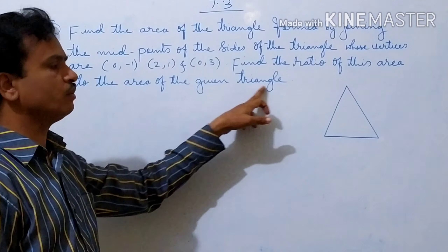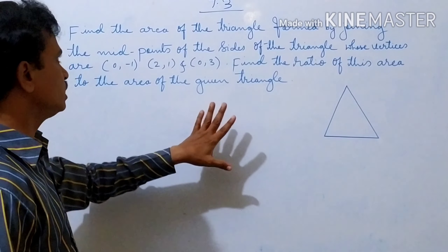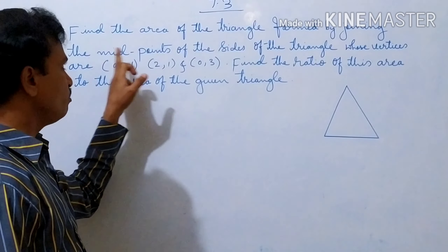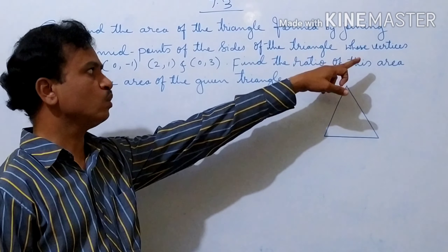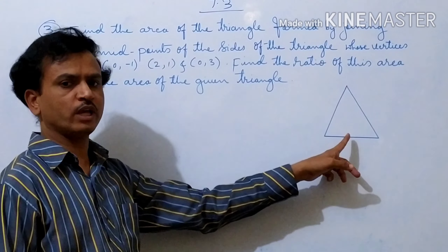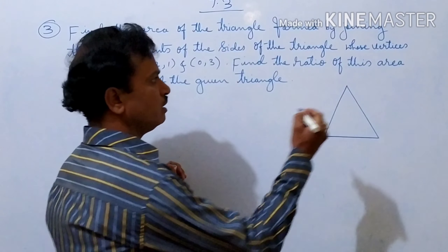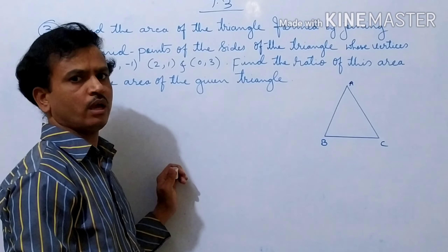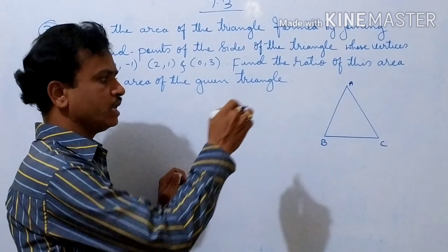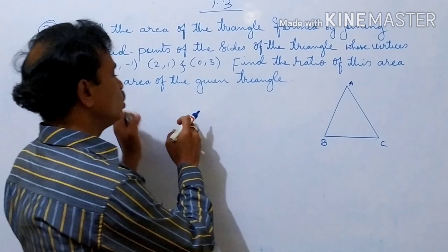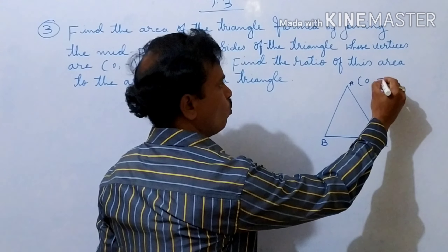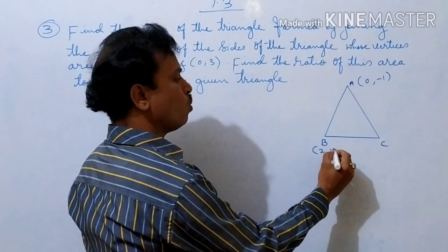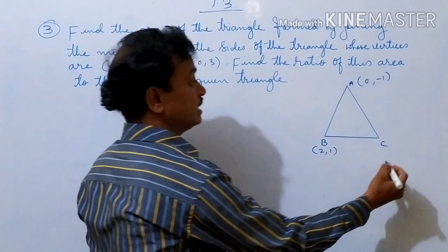First, here — find the area of the triangle formed by joining the midpoints of the sides of the triangle whose vertices are given. That means here you should take triangle ABC, where A, B, C are the vertices. So A is (0, -1), B is (2, 1), and C is (0, 3).